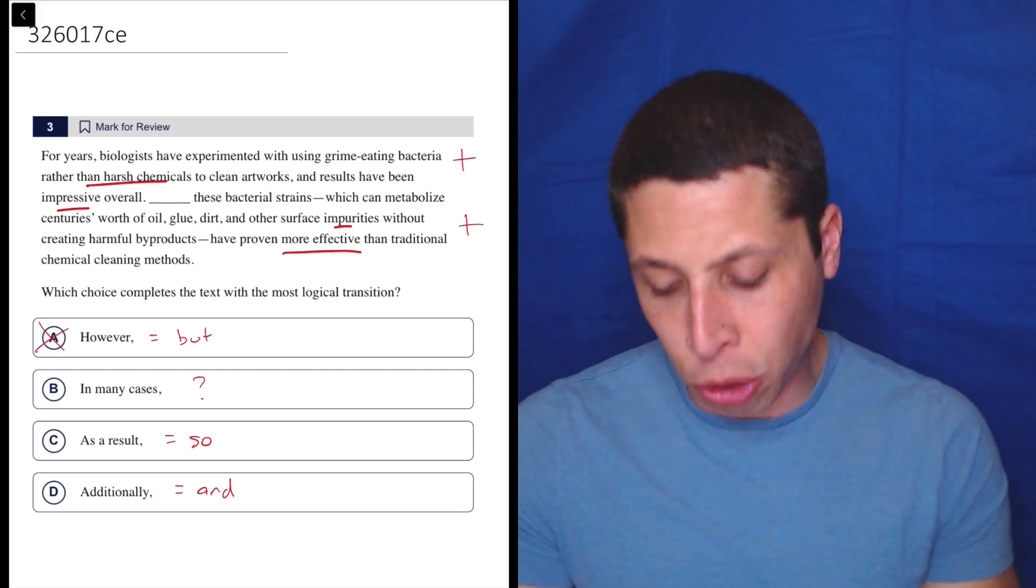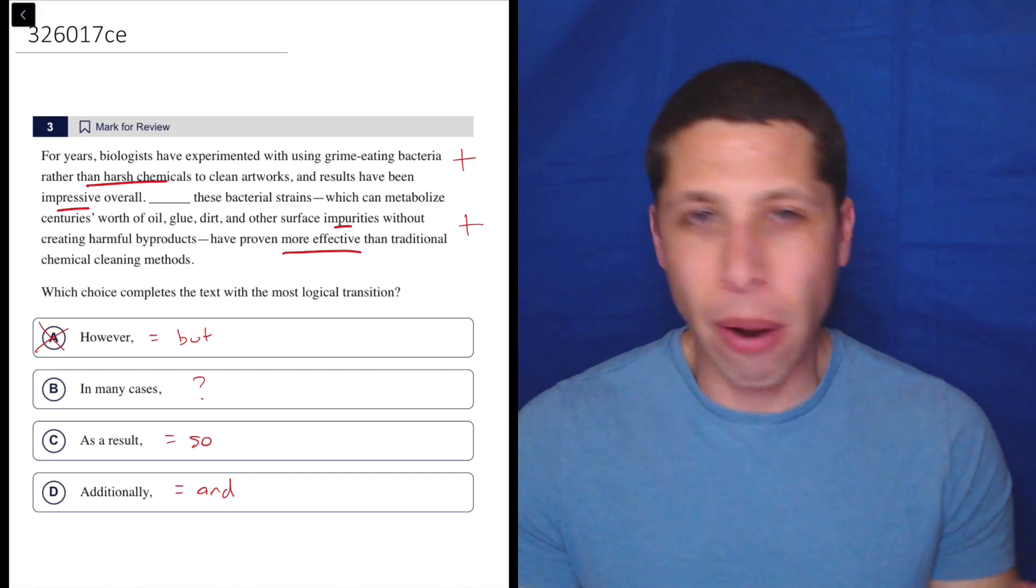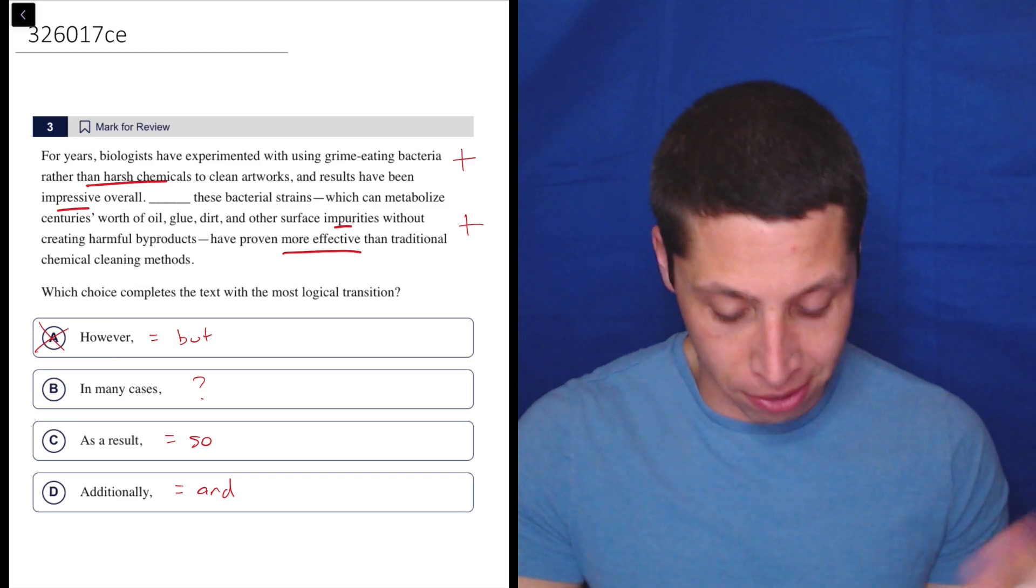So that'd be weird then to use a choice like A because however is a contrast. And if we have two positives, why are we using a contrast? So that doesn't make any sense.